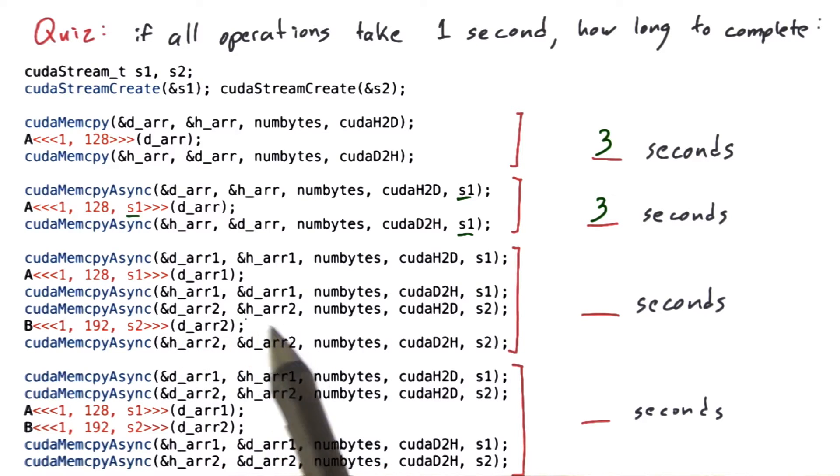And then I'm copying h_array 2 to d_array 2, doing some operation on d_array 2 by launching kernel B, and copying d_array 2 back to h_array 2.